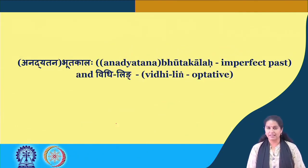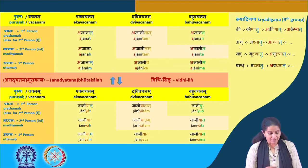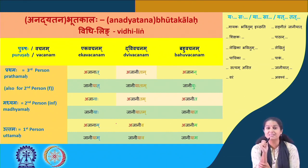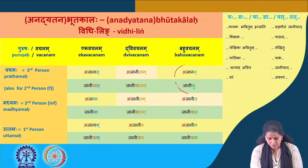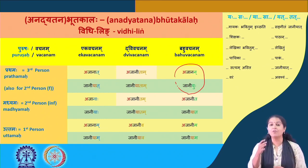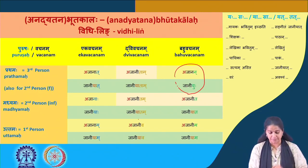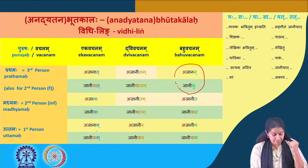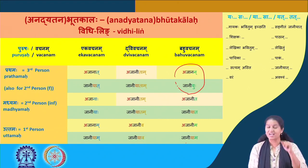Now look at the anadyatana bhuta and the vidhiling — a comparative table. Ajaanat becomes jaaniyat; ajaanitam becomes jaaniyatam; ajaanan becomes jaaniyahu; ajaanaha becomes jaaniyaha; ajaanitam becomes jaaniyatam; ajaanita becomes jaaniyatam; ajaanam becomes jaaniyam; ajaaniva becomes jaaniyava; and ajaanima becomes jaaniyama.